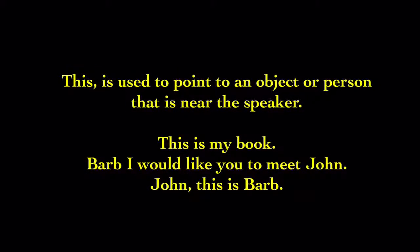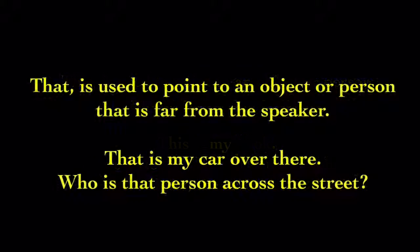This is used to point to an object or person that is near the speaker. For example: 'This is my book.' or when introducing someone: 'Barb, I would like you to meet John. John, this is Barb.' That is used to point to an object or person that is far from the speaker. For example: 'That is my car over there.' or 'Who is that person across the street?'